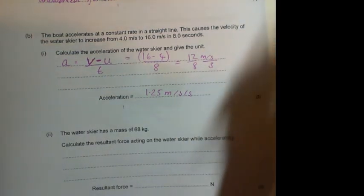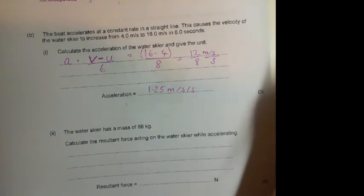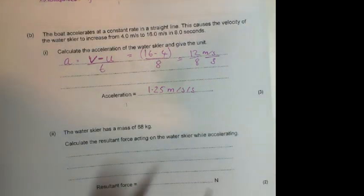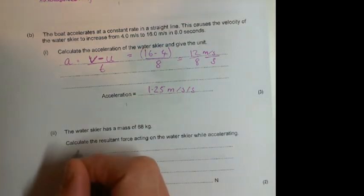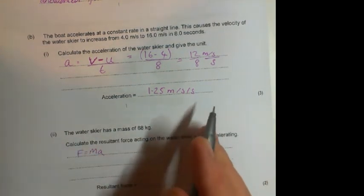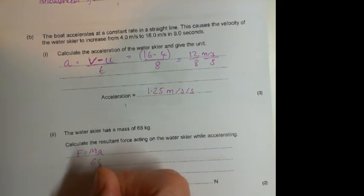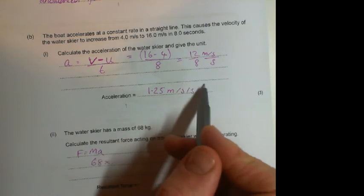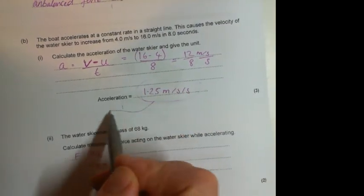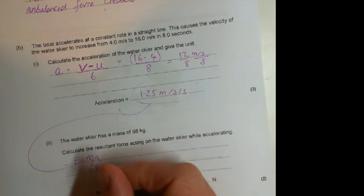Okay, next up. We've got, the water skier has a mass of 68, so I'm going to use F = ma here, because with the mass and you've got an acceleration, you know what's coming next. So it's going to be 68 times—and then whatever you got for that answer, it doesn't matter what you got. And if you didn't write down something, write down anything times 1.25, because you'll still get full marks for this one. So you still get both marks for that one.